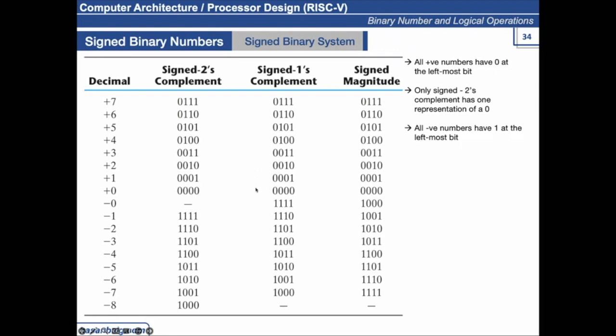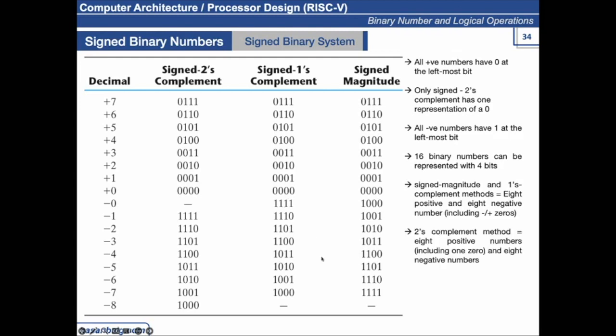And 16 binary numbers can be represented with 4 bits. Sign magnitude and 1's complement method: 8 positive and 8 negative values, including the positive and negative 0's. 2's complement method: 8 positive numbers, including 1, 0, and 8 negative numbers.